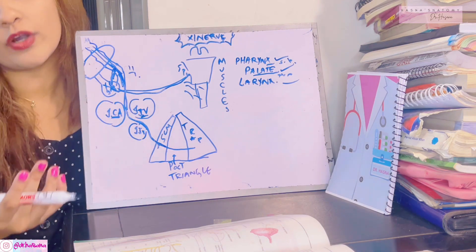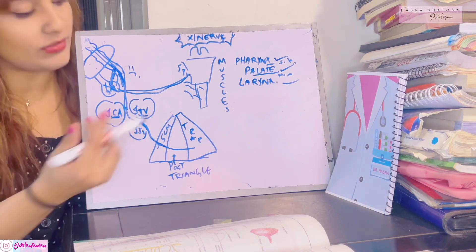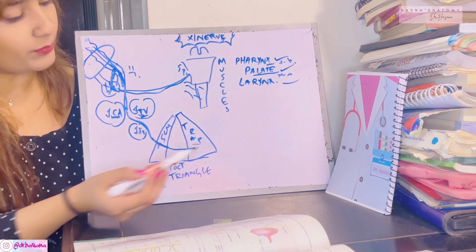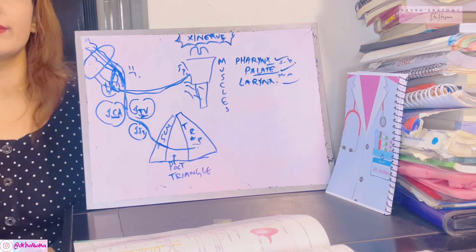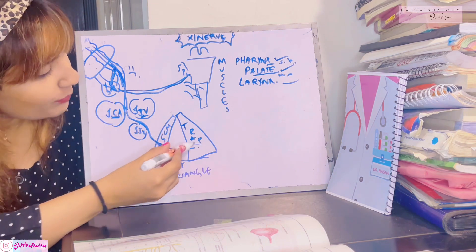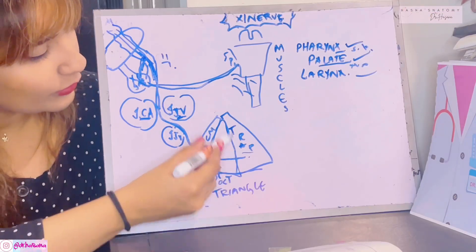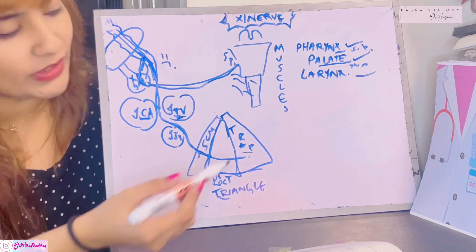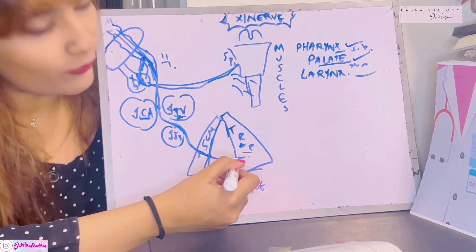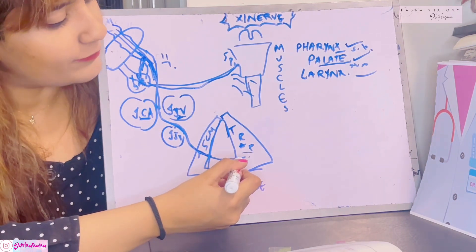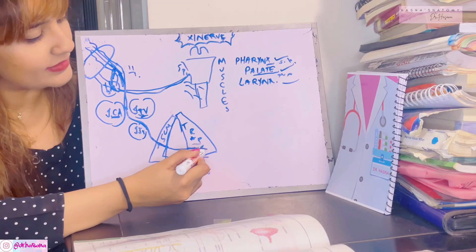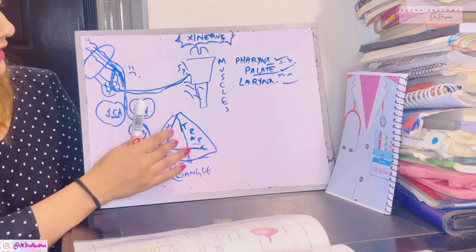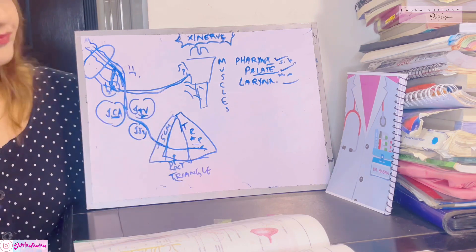After supplying the sternocleidomastoid, the spinal accessory nerve continues to the trapezius muscle. It passes through the posterior triangle of the neck — forming a content of that triangle — and finally enters the trapezius muscle to supply it. That is how the spinal accessory nerve terminates.